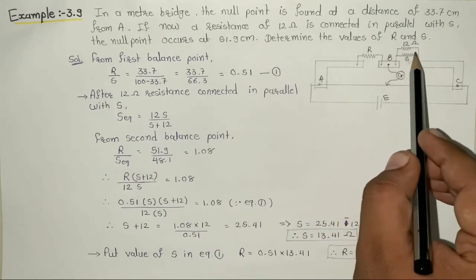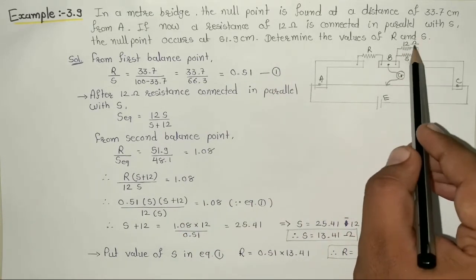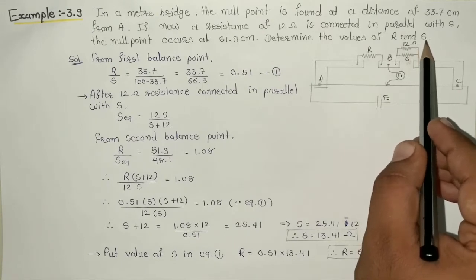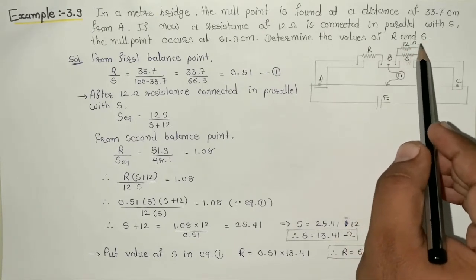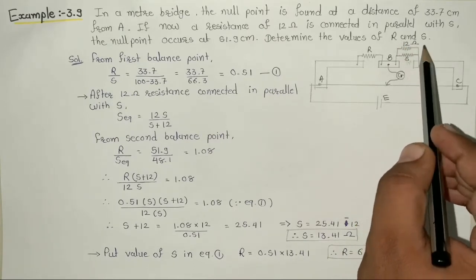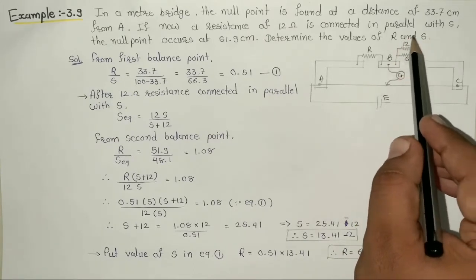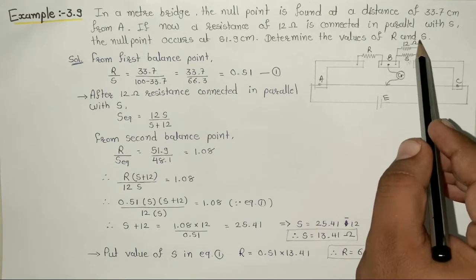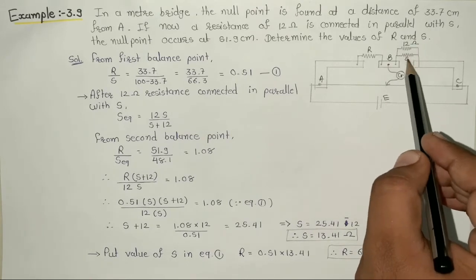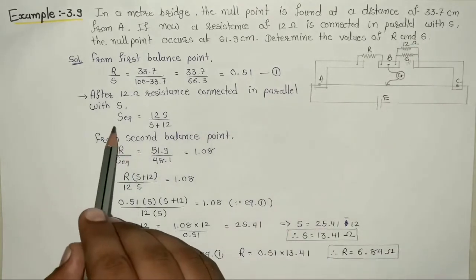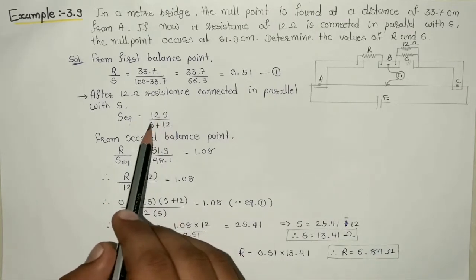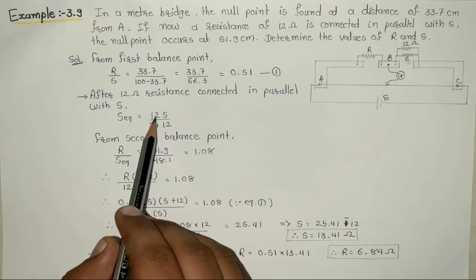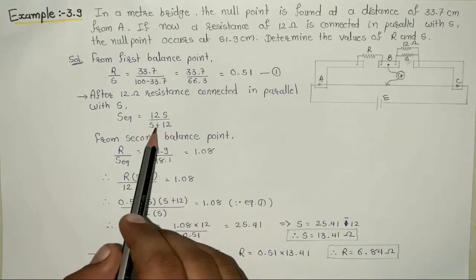अब यह जो S है, उसके across में 12 ohm का resistance parallel connect कर देना है. तो अब यहाँ पर हम सिर्फ S नहीं लिख सकते, इन दोनों का equivalent resistance लिखना पड़ेगा. S equivalent equal to दोनों का multiplication divided by दोनों का addition, that means 12S divided by S plus 12.